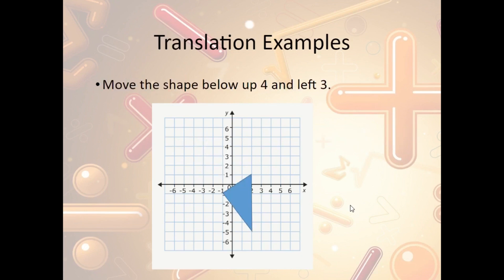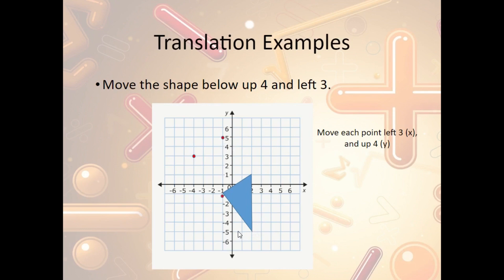Another translation example: take the shape and move it up 4 units and to the left 3. Take each point, move it left 3 and up 4, and plot the new position. Repeat for each vertex of the triangle. Connect the new dots and you have two triangles that are exactly the same, just translated to a new location.